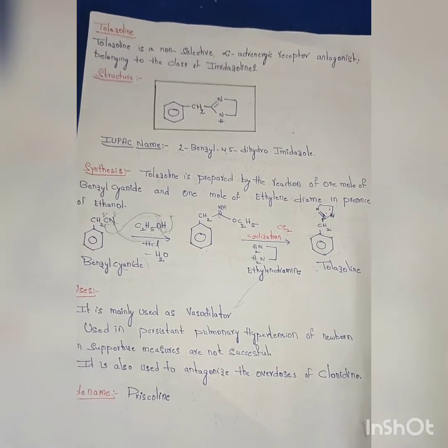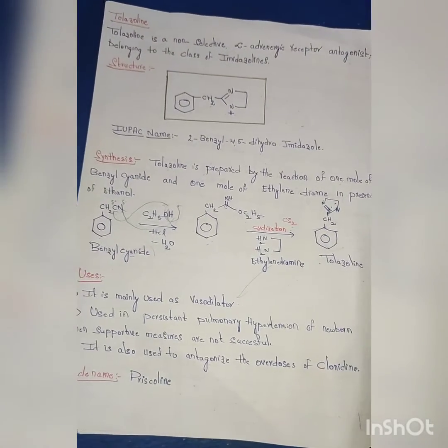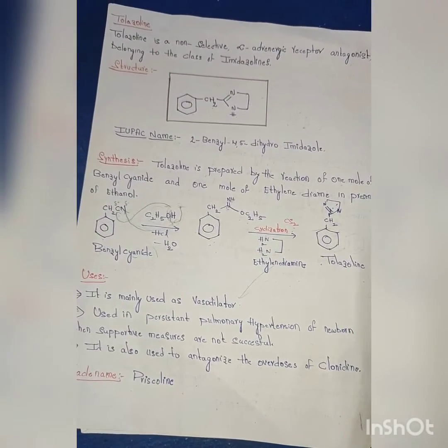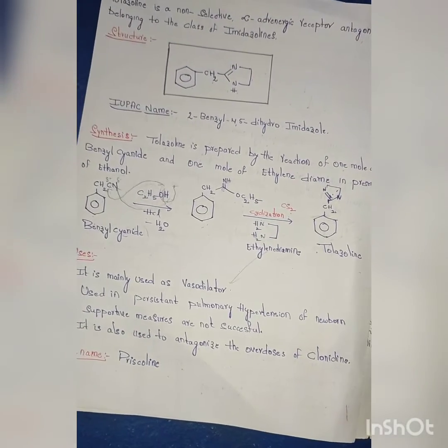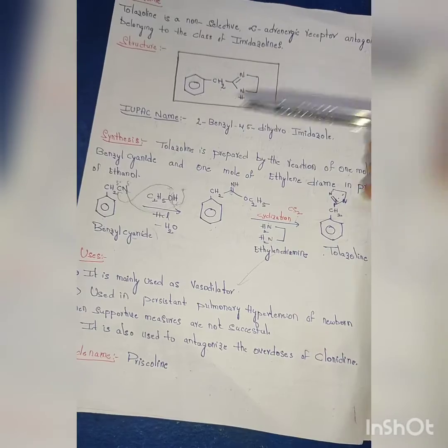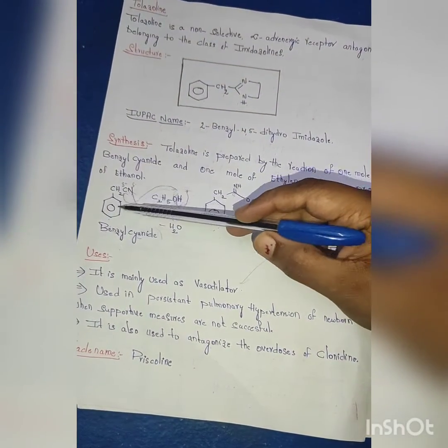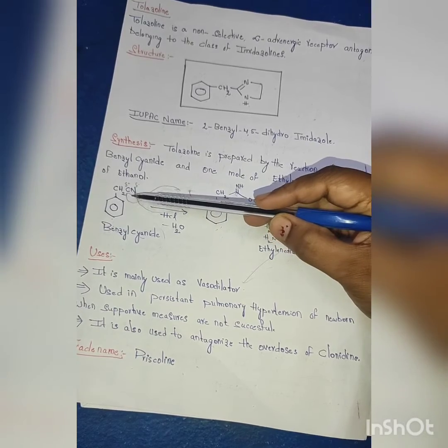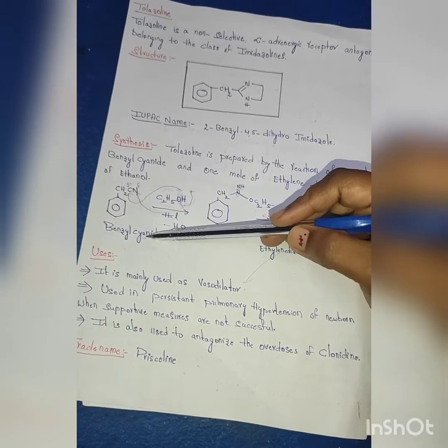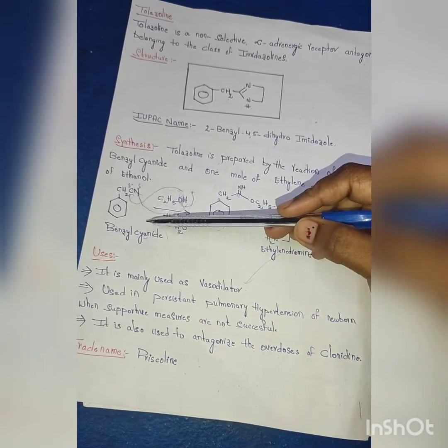Now coming to the synthesis: as I have told, it is prepared by the reaction of one mole of benzyl cyanide and one mole of ethylene diamine in the presence of ethanol. Benzyl cyanide is C triple bond N. This is also called phenyl acetonitrile.